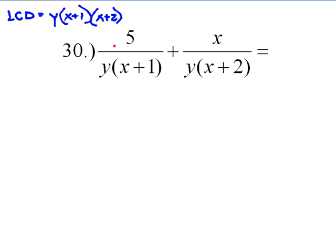Now, of that least common denominator, what does this denominator not have? It's the x plus 2. So we need to take the top and multiply it by x plus 2. Now, this one, what do I not have? x plus 1. So this numerator we need to multiply by x plus 1.